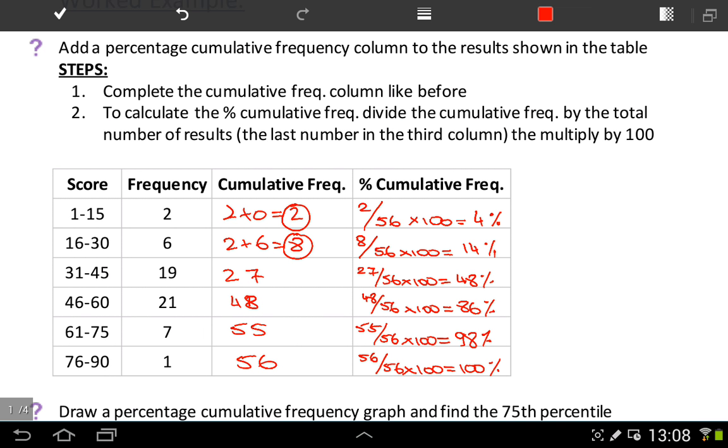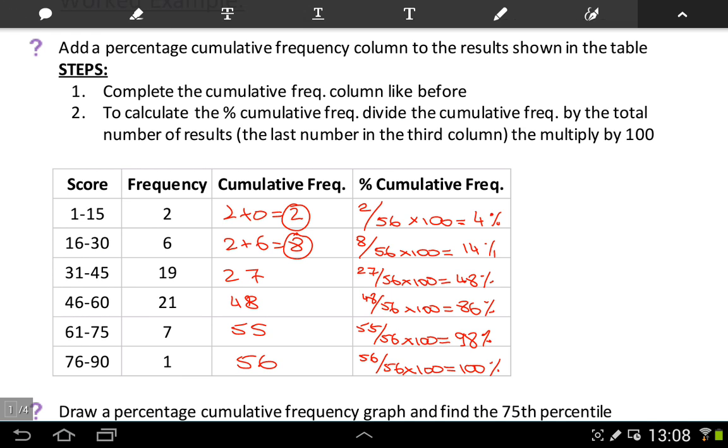There's our percentage cumulative frequency column completed. For each row, we've done the exact same thing. We've taken each cumulative frequency, divided it by 56, which is our total number, and multiplied by 100. You'll notice that when we get to the last row here, we get to 100%. So the way to check that you've done this properly, your very last row will always be 100%.